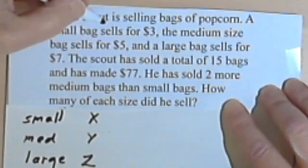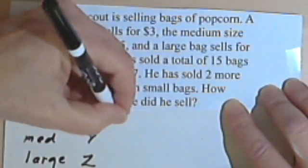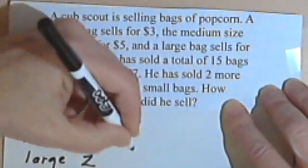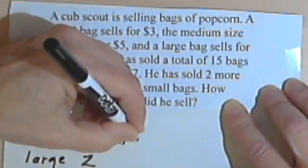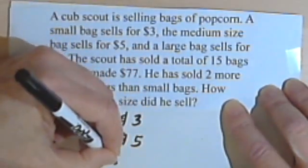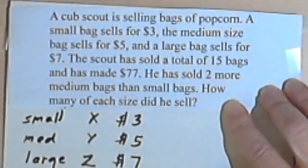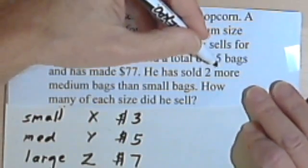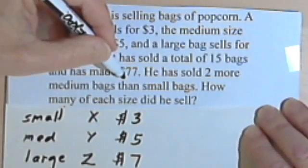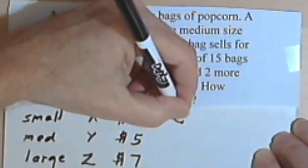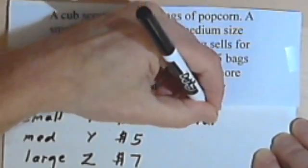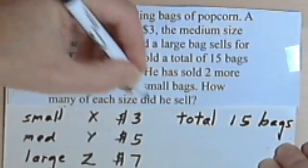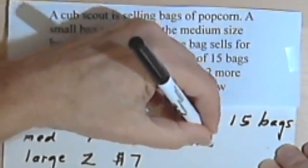Going back to the problem, what else do we know? We know how much each size costs. The small size sells for $3, the medium size sells for $5, and the large size sells for $7. What else do we have? The Scout has sold a total of 15 bags and has made $77. Totals are really useful. Let's write this down. So there was a total of 15 bags and a total of $77.